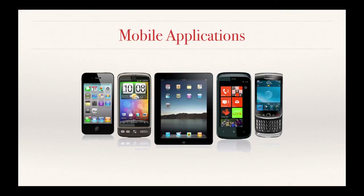Mobile applications are not really that much different from traditional desktop applications, but there are differences. First, there's more of a limit on memory and processing power in a mobile device. Second, there's usually special hardware that the software can take advantage of — like the camera, the accelerometer, or the GPS.